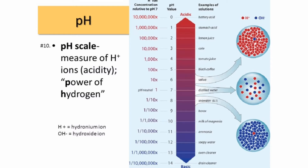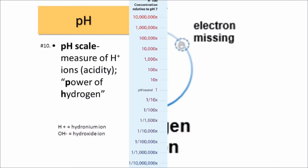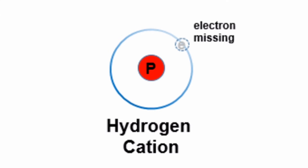So why is that? Well, it turns out that hydrogen, or more specifically, a positive hydrogen ion, which is also known as a cation, can play a major role in how acidic or basic something is.